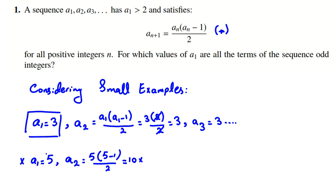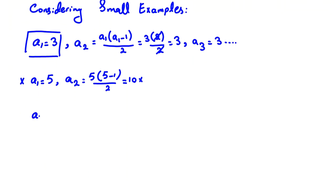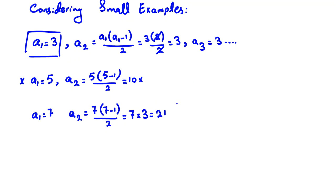Let's see what the next good number is. We check a1 equal to 7. Then a2 equals 7 times (7 minus 1) over 2, which is 7 times 6 over 2, equal to 21. Then a3 is 21 times (21 minus 1) over 2, which is 21 times 20 over 2, equal to 10. It's even, it's bad. So a1 equal to 7 is also bad.